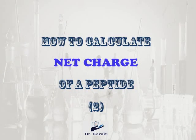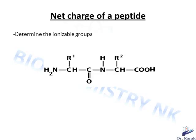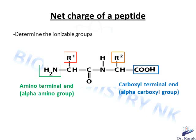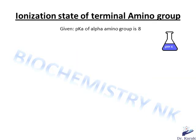Based on a special request, I've decided to make this video in which we're going to solve together another example on the net charge of a peptide chain at a certain pH. In order to calculate the net charge of a peptide, we need to examine the side chains of the amino acids composing the peptide chain to determine if they hold ionizable groups — groups that can lose or gain a hydrogen atom — and we should not forget the amino and carboxyl functions at the terminal ends of the peptide chain. The next step is to determine the ionization state of each functional group at the required pH.